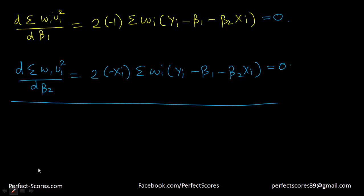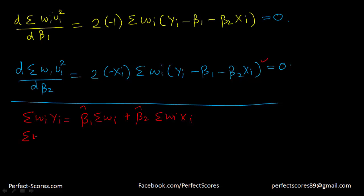Equating these derivatives to zero gives us the normal equations. The first equation is: summation of wi·yi equals β1-hat times summation of wi plus β2-hat times summation of wi·xi. The second equation is: summation of wi·xi·yi equals β1-hat times summation of wi·xi plus β2-hat times summation of wi·xi².